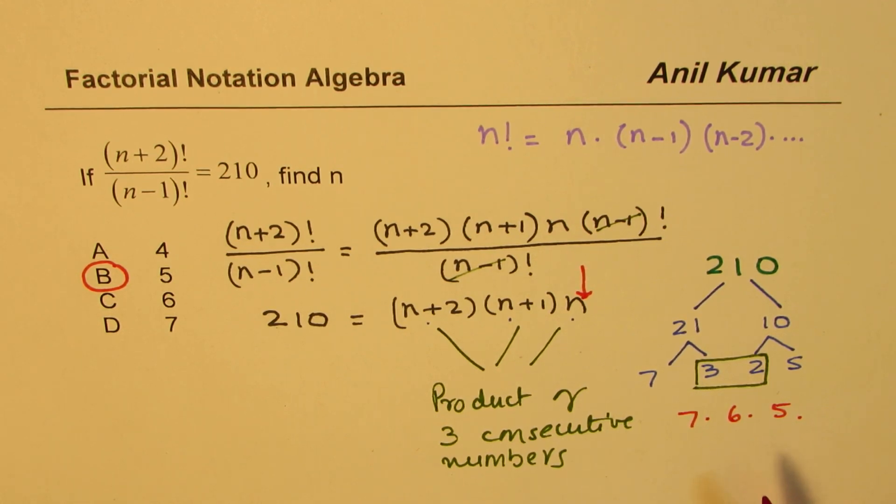In a multiple choice question, when you get something like this, you could actually give a value and then work out backwards. You just try out one of these numbers and see if you get 210. If yes, that's your answer. That could be even a shorter way of getting the right answer.